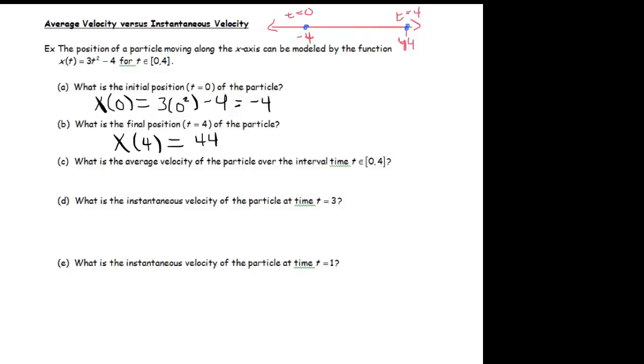So this question is, what is the average velocity of the particle over the time interval 0 to 4? Now here's where it's useful to actually abandon this one dimensional number line to analyze this particle's motion and go to two dimensions. And let's have our x-axis be time and our y-axis be the position of the particle. Because we know when t is 0, the particle is at negative 4. So at t equals 0, it's at negative 4. And then at t equals 4, it's up here at 44.